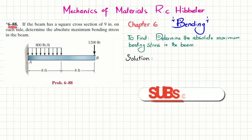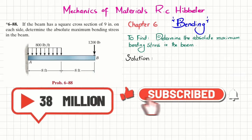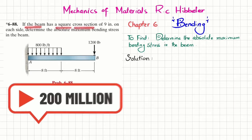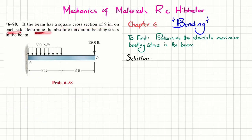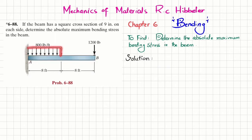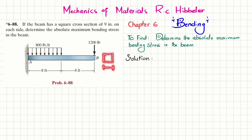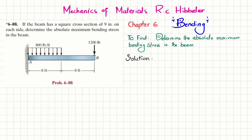Welcome back. Problem 6-88, taken from chapter six on bending in Mechanics of Materials by R.C. Hibbeler. The statement: if the beam has a square cross section of nine inches on each side, determine the absolute maximum bending stress in the beam. This is a cantilever beam where A is fixed, with a uniformly distributed load over 8 feet and a concentrated load of 1200 pounds at point B. The cross section is 9 inch by 9 inch.